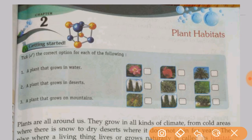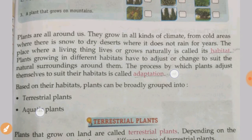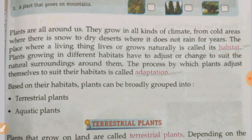Plants are all around us. Plants are found in all kinds of climates, from cold areas where there is snow to dry deserts where it does not rain for years. The place where a living thing lives or grows naturally is called its habitat.